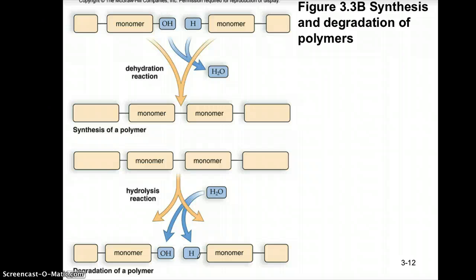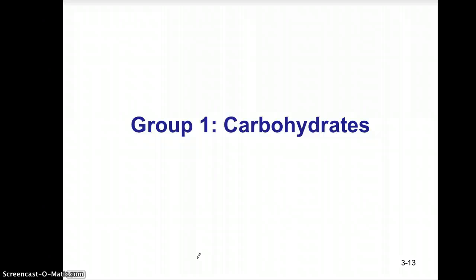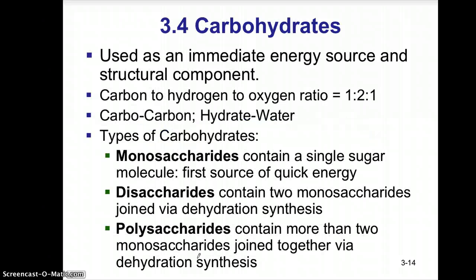Our first group of molecules is carbohydrates. Carbohydrates are used as an immediate source of energy, and larger polymer carbohydrates make up structural components of certain living things. The carbon to hydrogen to oxygen ratio is 1 to 2 to 1, which makes sense because 'carbo' gives you the carbon portion, and 'hydrate' stands for water. So for every one carbon atom you have two hydrogens and one oxygen.